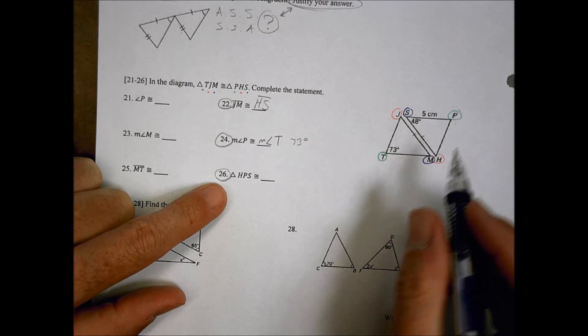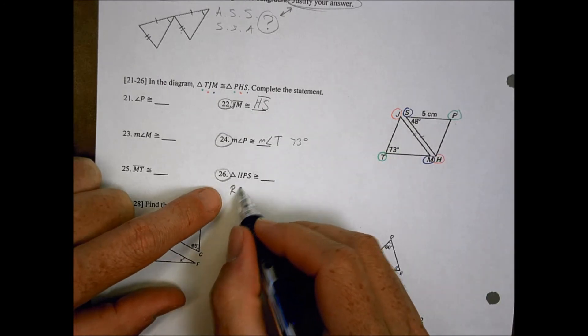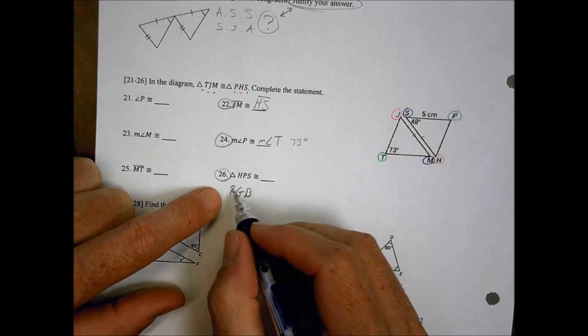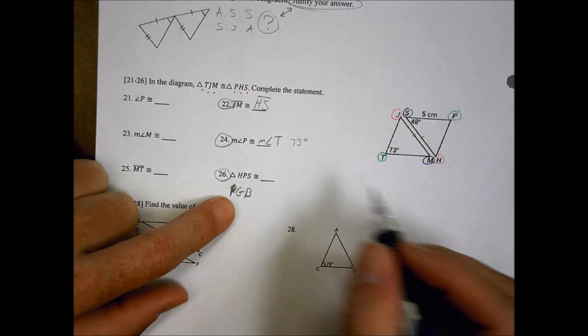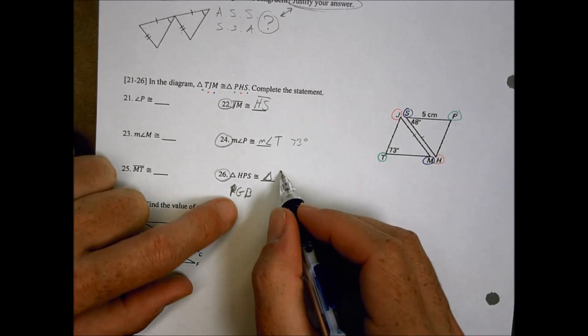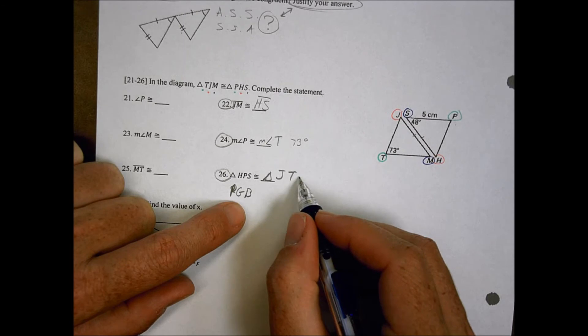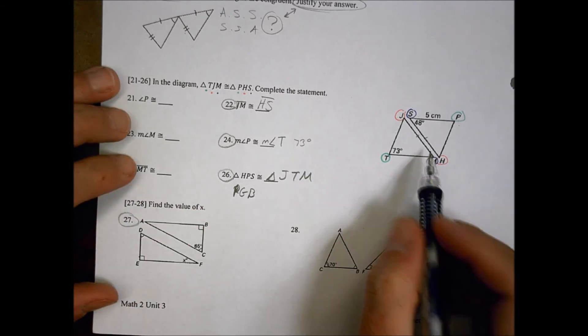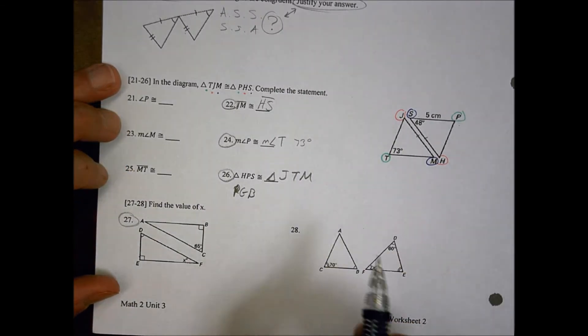And triangle HPS, so we're going to go peach, green, blue, oops, peach, peach, green, blue, is going to be the same as triangle JTM. So keeping my order there the same, that's how I would look at number 26.